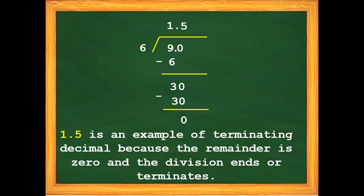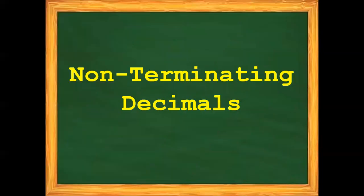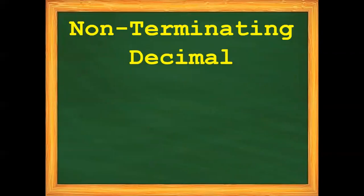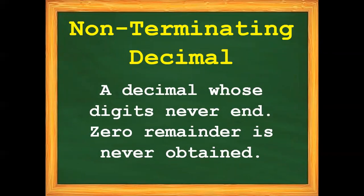Is that clear? So 9 divided by 6 and 3 divided by 4 can give a quotient that is a terminating decimal. Now let's proceed to non-terminating decimals. What is a non-terminating decimal? A non-terminating decimal is a decimal whose digits never end and a remainder of 0 is never obtained. It means the division will continuously go on without ending.